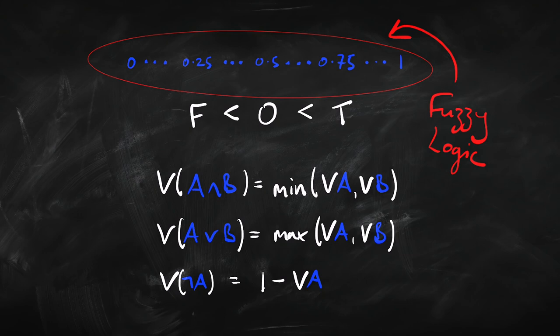We can think of these numbers as a sliding scale from one — totally true — to zero — totally false — with every shade in between, no sudden jumps, a continuous scale all the way from totally true to totally false. That's fuzzy logic. We're not going to look at that in more detail, but it's just an extension of the three-valued logic we're looking at now.